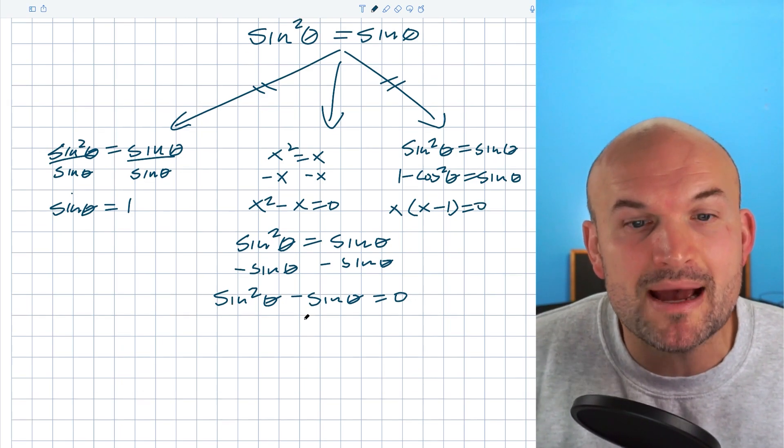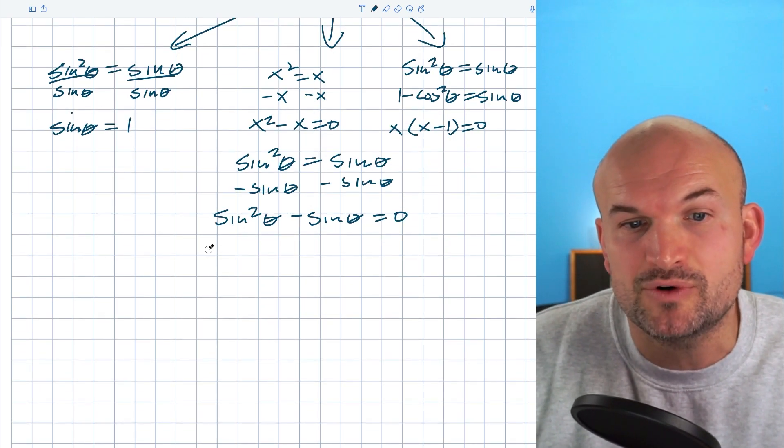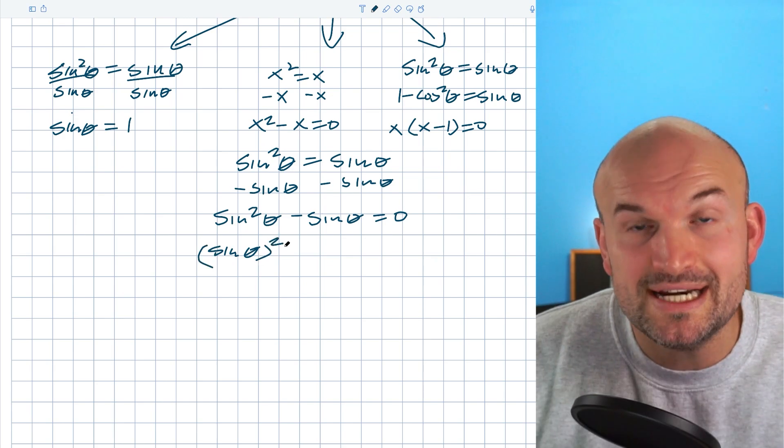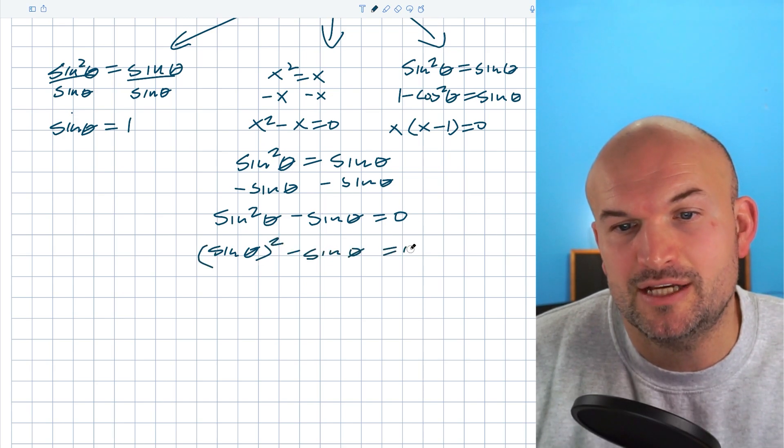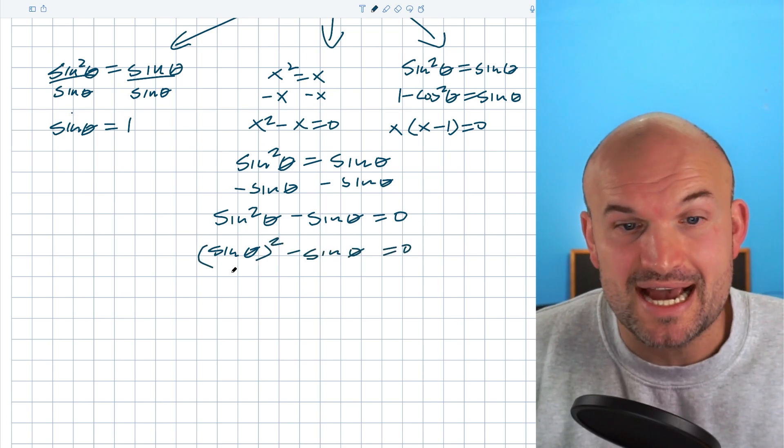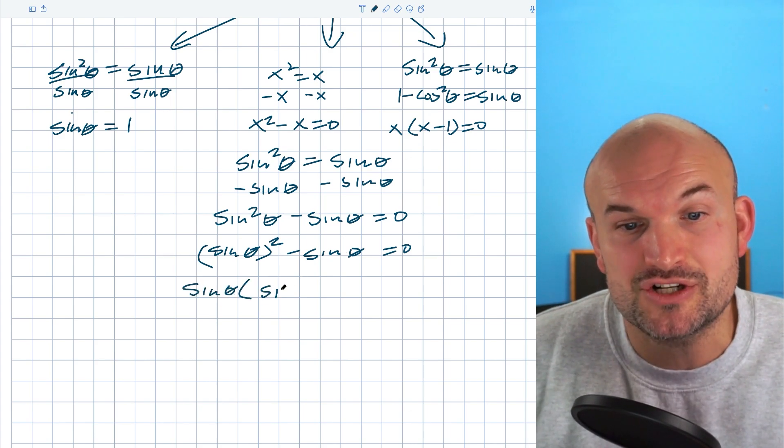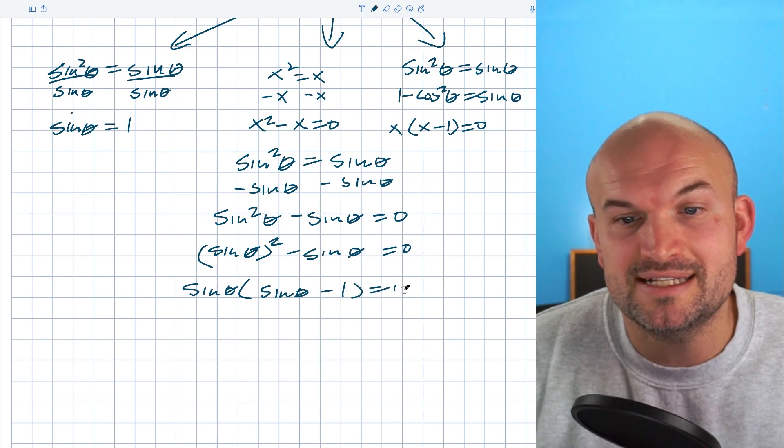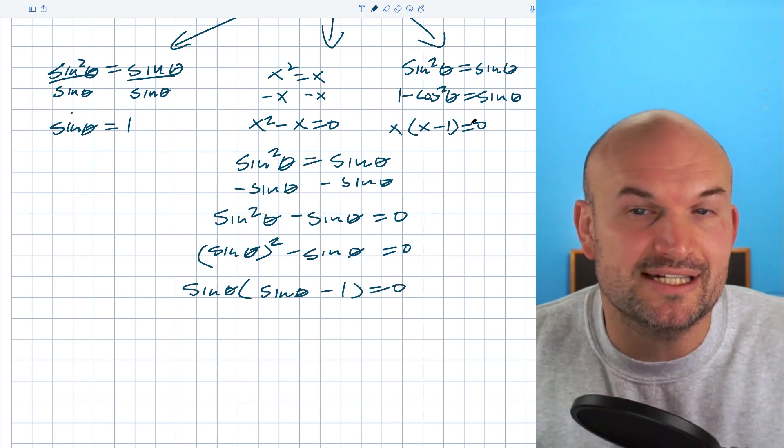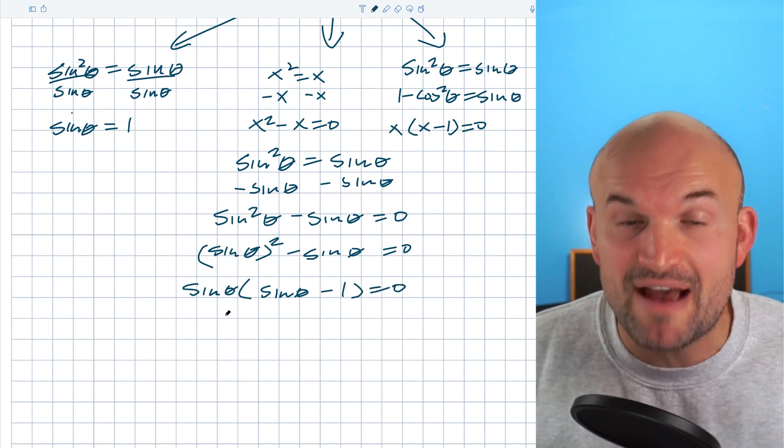This is the exact same case. Remember that sine squared of theta can be rewritten as sine of theta quantity squared minus sine of theta equals zero. So now I have a common sine, so I can factor out my sine of theta and that's going to be multiplied by sine of theta minus one equals zero. Now whenever you have the product equal to zero, you can set each of these factors equal to zero.